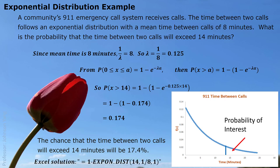We also have an Excel solution for exponential distribution. Use EXPON.DIST: enter 14 as x, 1/8 as lambda, and 1 for cumulative. Cumulative means the left-side area up to 14, so we use 1 minus this result to get the right-side probability. See you next time!